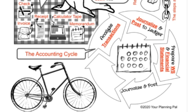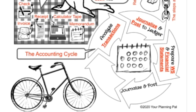Then accountants prepare a worksheet — a working paper where accountants make sure all of their numbers make sense and are accurate. They use that worksheet to prepare financial statements, such as the income statement and the balance sheet. Those are nice, neat reports that business owners and managers use to make educated decisions. Financial statements are also used by investors to determine if they want to invest or continue to invest in certain companies.